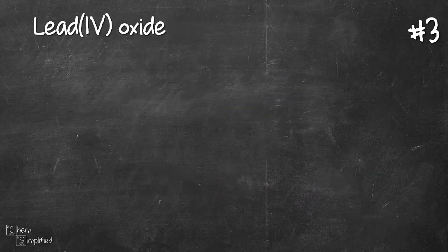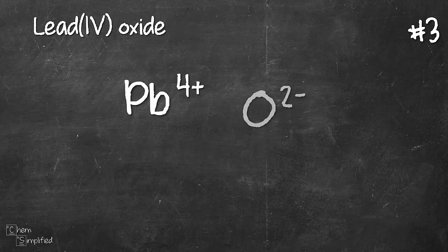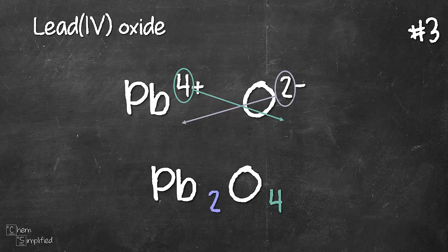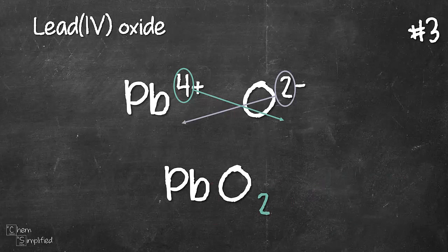Next, lead(IV) oxide. Lead(IV) is Pb4+, oxide same, O2-. So we do the same thing, cross over and that gives us Pb2O4. Recall earlier the second example we had to simplify? Well it's the same case here. Because we have 2 and 4 for the subscript, we can divide the two numbers by 2 and that will give us PbO2.